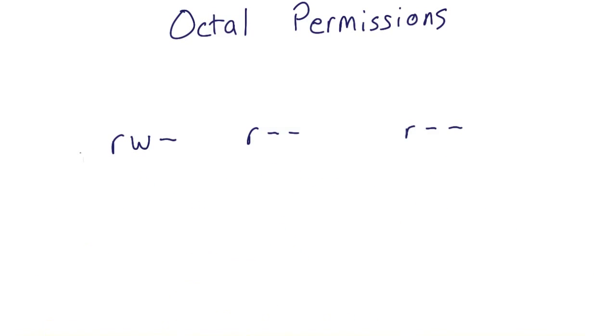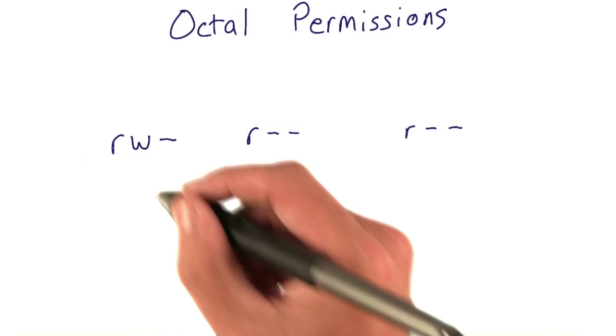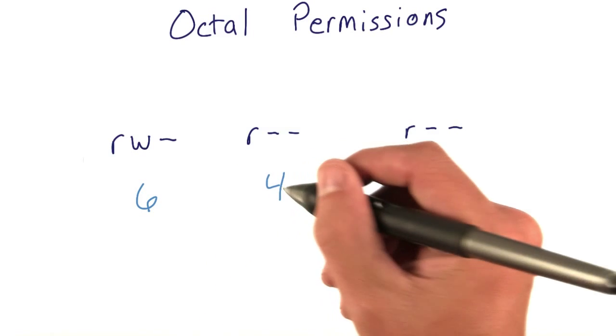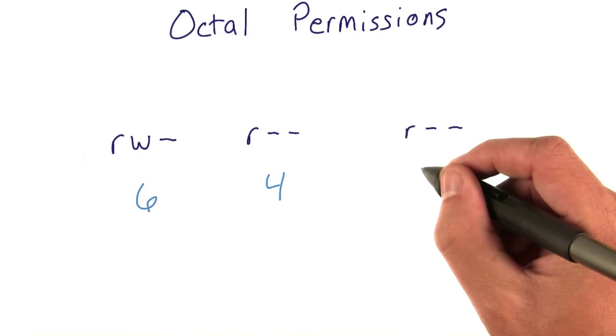r is a 4, and write is 2. So the user value would be 6. For group, we just have an r, so the value is 4. And for everyone, we have a value of 4.